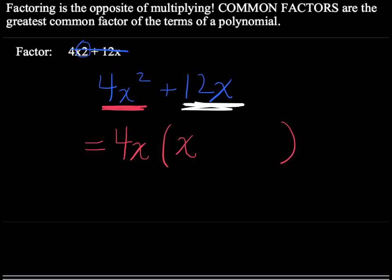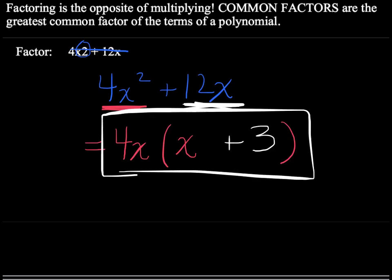12x, if I divide that by 4x, I in fact get 3, because 3 times 4x will give me 12x. So there's my answer, 4x times x plus 3.